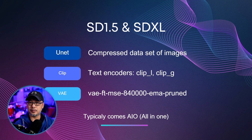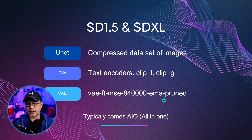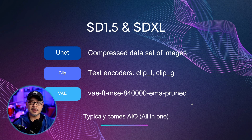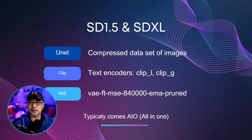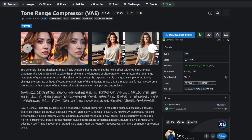If we take a look at Stable Diffusion 1.5 and SDXL, within the clip are text encoders — Clip L and Clip G. In the early days of SD 1.5, a particular VAE was the most commonly used. Sometimes you would load it manually, but down the road developers started to incorporate it into models and bake it in. There are still some models for SD 1.5, maybe not so much SDXL, that require a specific VAE.